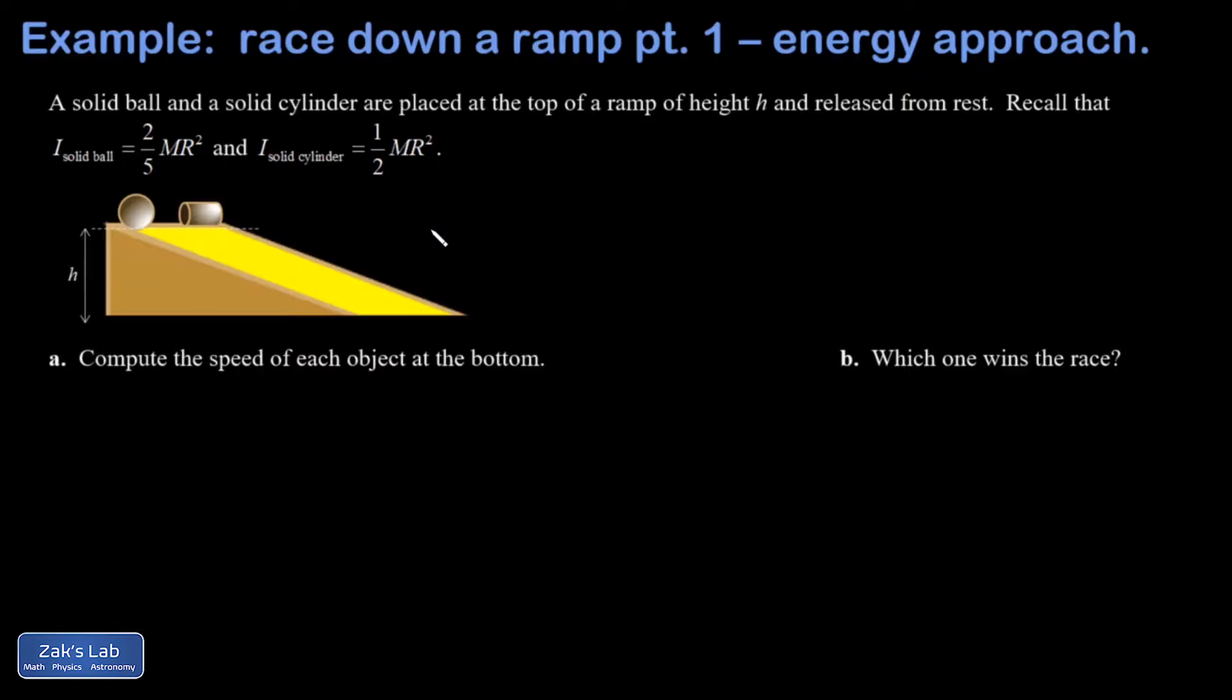At its core this is an energy conservation problem. I have an initial potential energy of MGH for each of these objects, but it's getting pumped into their translation and rotation in different percentages and that's what changes the final speed.